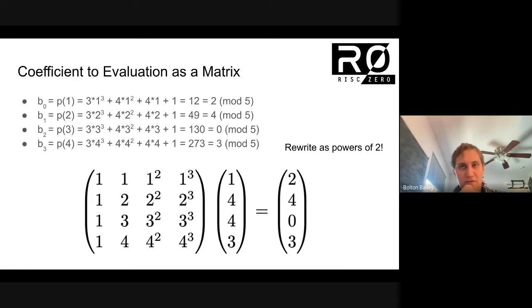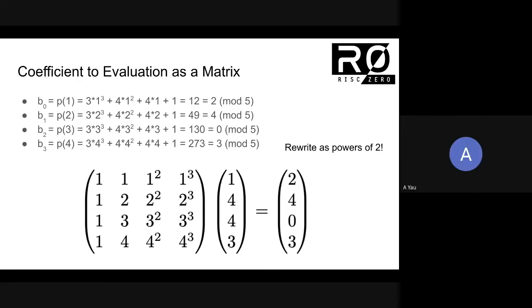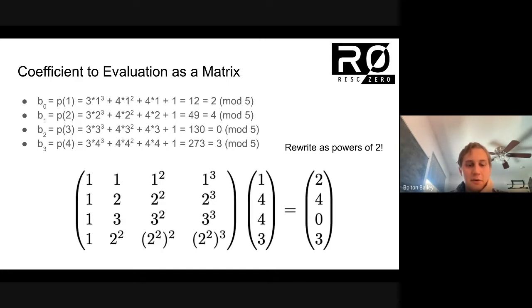So, maybe the first thing we can do is we can check how can we rewrite four as a power of two? Does anyone have a conjecture about what power we can raise two to to get four? This is maybe too easy of a question. Yeah, two. I think I heard two, and that's right. So, we can replace four by 2², and that gives us basically an equivalent way of writing four. And now we can rewrite three, actually, as a power of two as well. This is maybe a bit harder.